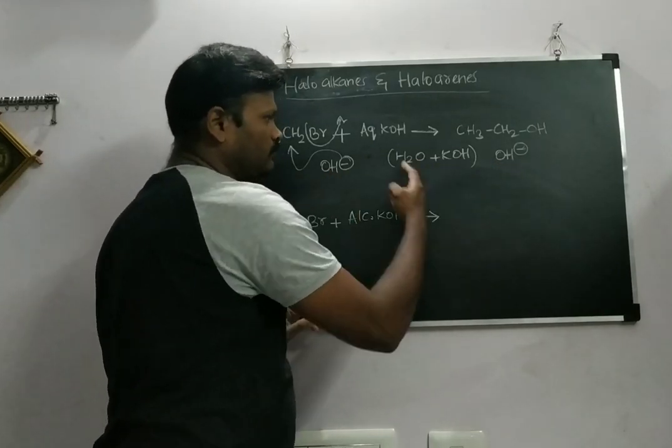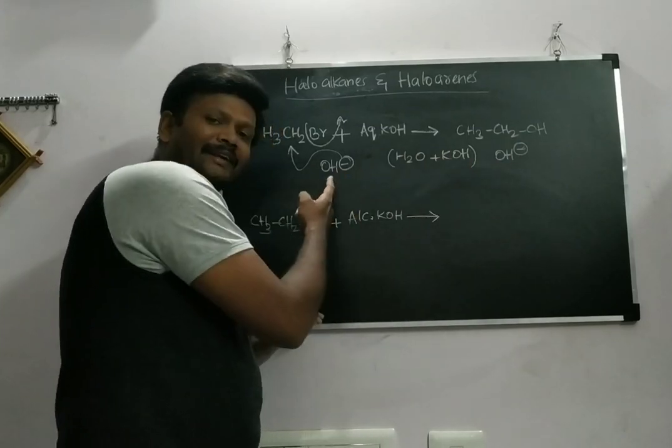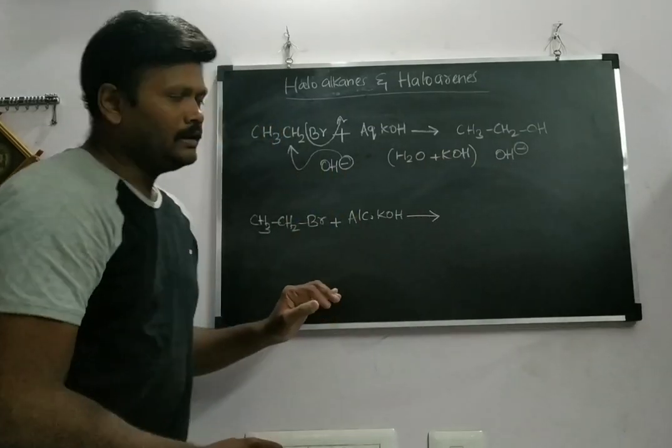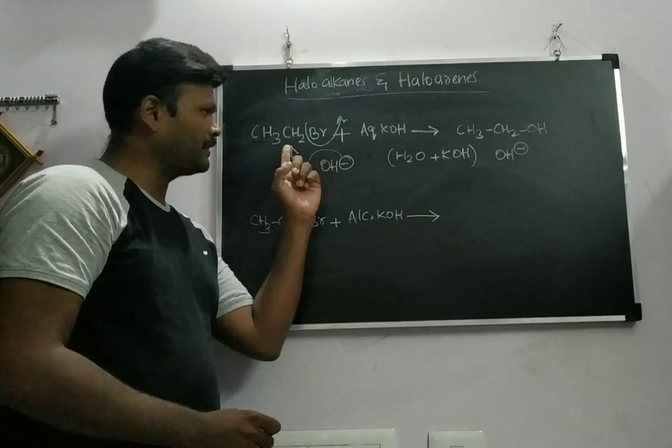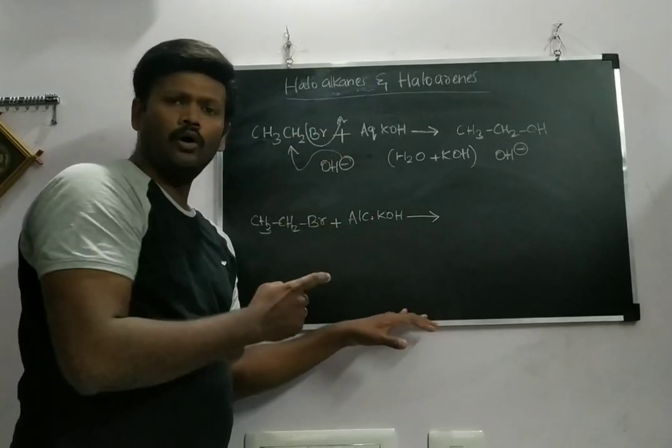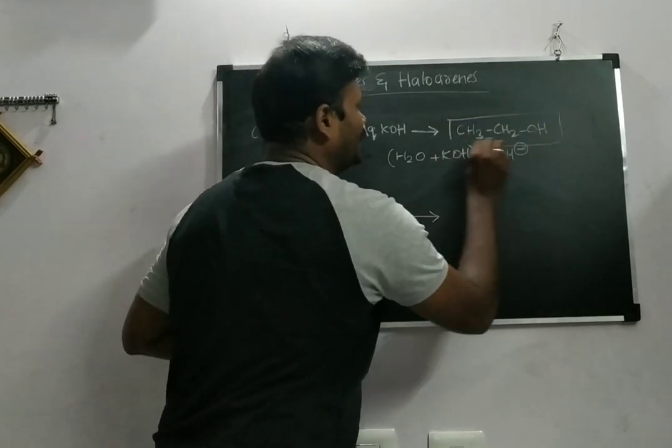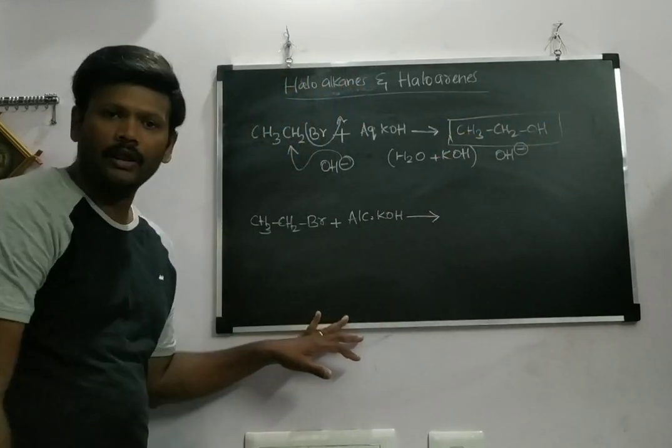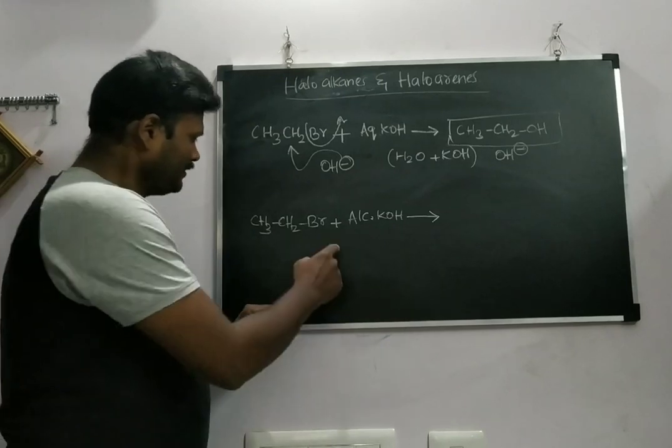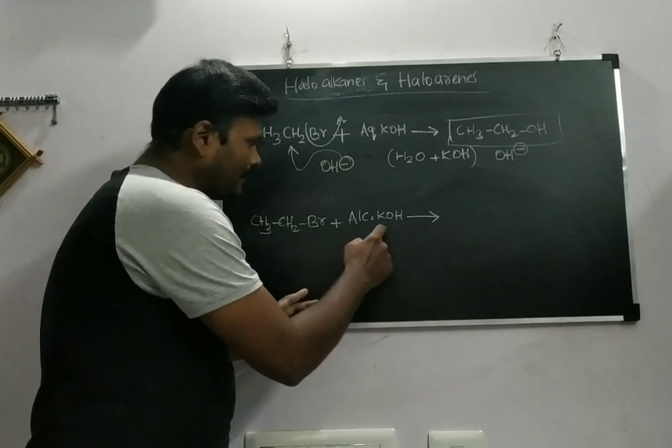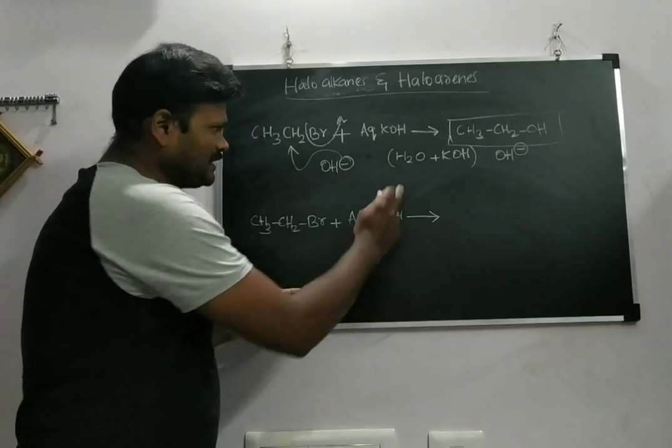We require a strong nucleophile. This OH- coming from this reaction will act as a strong nucleophile that will attack the carbon, and the Br- will go off its own. Because of that, I'm getting the product ethyl alcohol. Second thing is alcoholic KOH.